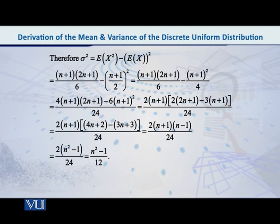So this n square minus 1 square, that is n square minus 1, this is being divided by 12, and this, my dear students, is the expression for the variance of the discrete uniform distribution.